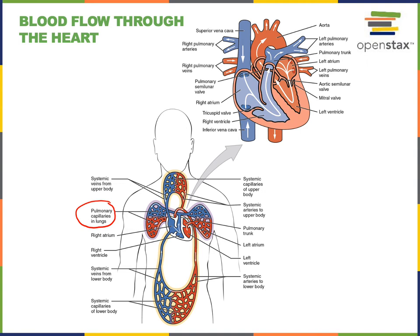We represent oxygen-rich blood with a red color. You'll see here that the pulmonary veins are shown in red. Here are the left pulmonary veins that transport blood from the left lung to the heart, and here are the right pulmonary veins. Blood flows through the pulmonary arteries to the lungs, and the blood in the pulmonary arteries has a relatively low oxygen concentration.